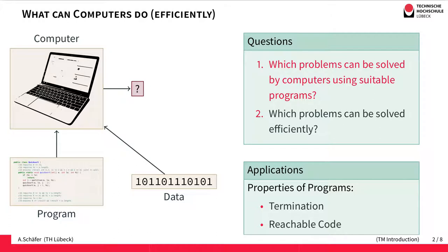The properties of programs we might be interested in are, for example, termination. You've written a program and you would like to know whether it terminates eventually or not. Or you've written some code and you would like to know whether a part of the code is actually reachable. These are all properties of programs that turn out to be undecidable — these problems cannot be solved in general by a computer.